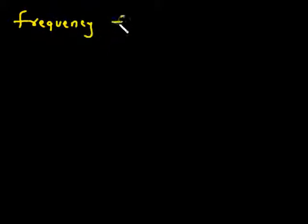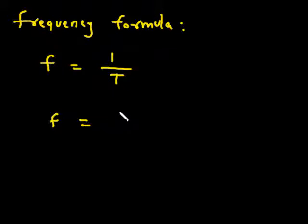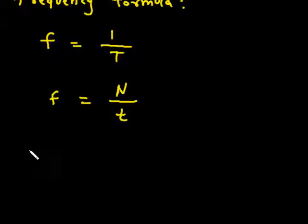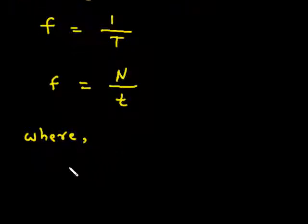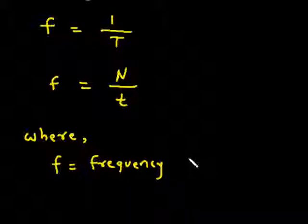Frequency formula. F is equal to 1 upon T. F is equal to N upon T.